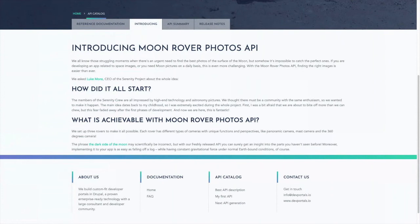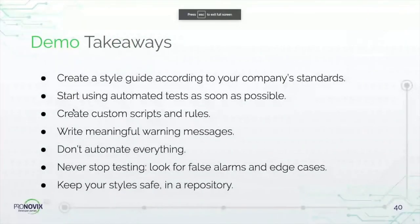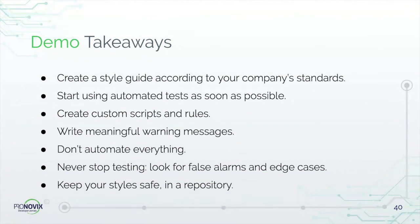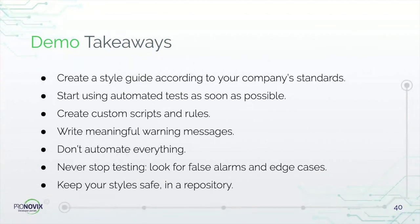Here are some takeaways: create a style guide according to your company standards and create rules suitable for your workflow — sometimes there's no right or wrong. Start using automated tests from the very beginning and write meaningful error messages to help yourself and your coworkers understand the nature and location of problems. Don't automate everything — if an expression can be used differently depending on its context, leave it for human eyes. Don't be afraid to delete rules that give you extra work; they have to make your life easier. Never stop testing, look for false alarms and edge cases, and keep your style guide safe in a repository.